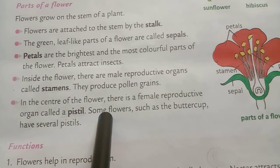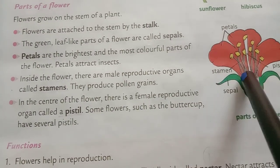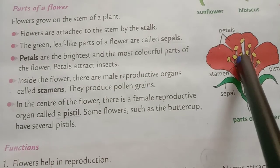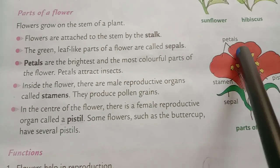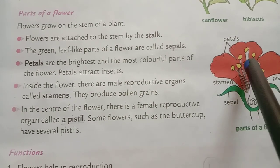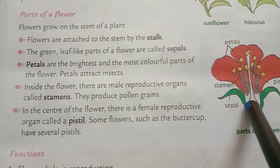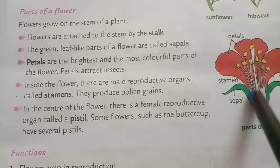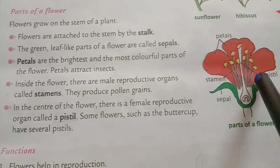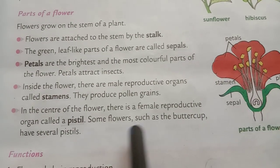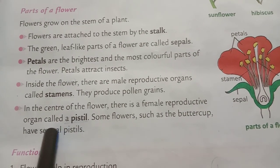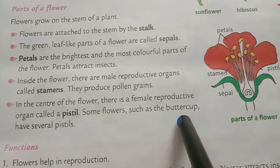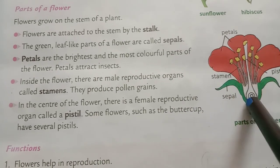In the center of the flower there are female reproductive organs called pistil. Some flowers, such as buttercup, have several pistils.